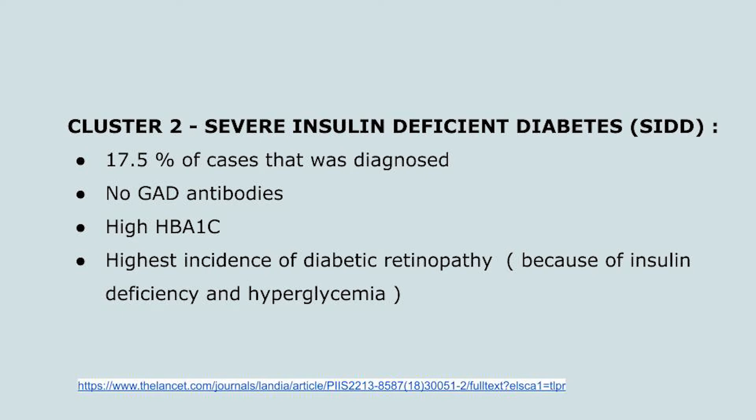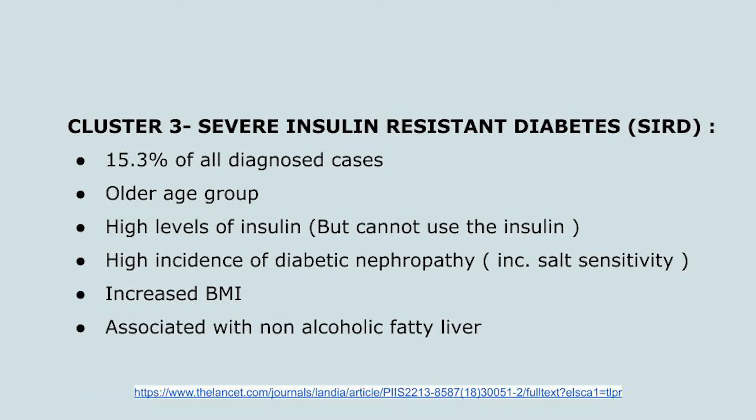In cluster 2, severe insulin deficient diabetes, 17.5% of patients were placed. They had no GAD antibodies, yet had very high HbA1c and the highest incidence of diabetic retinopathy, because insulin deficiency caused hyperglycemia which further led to retinopathy.